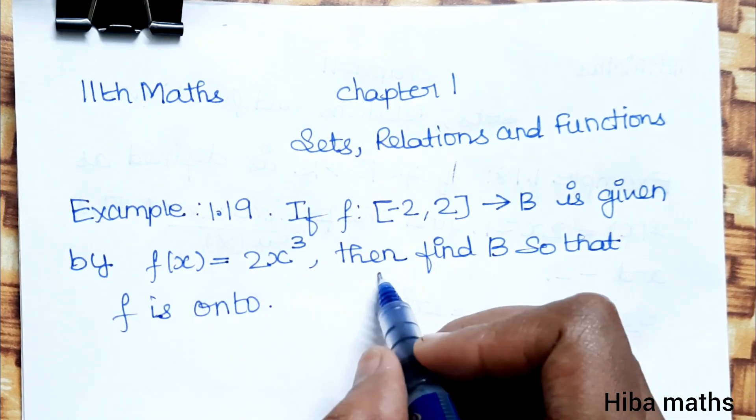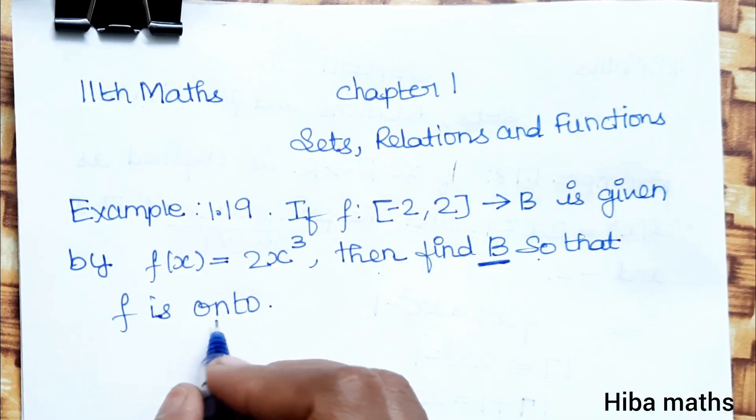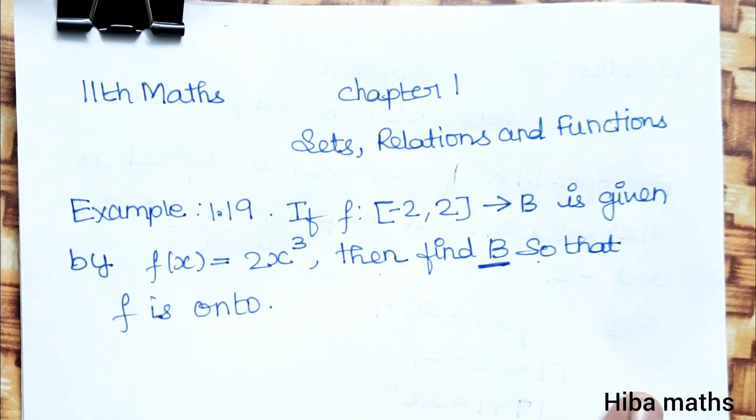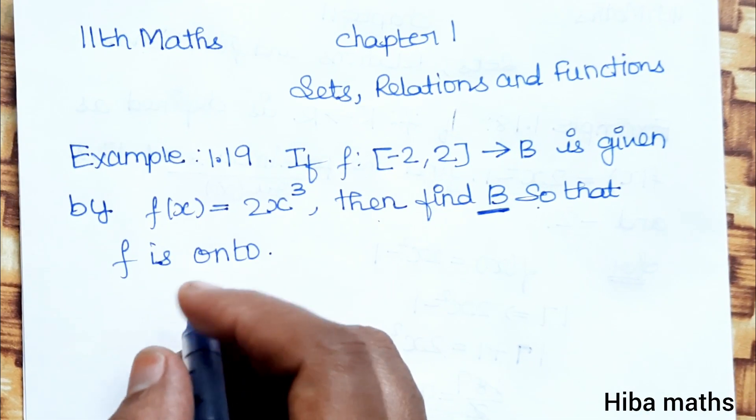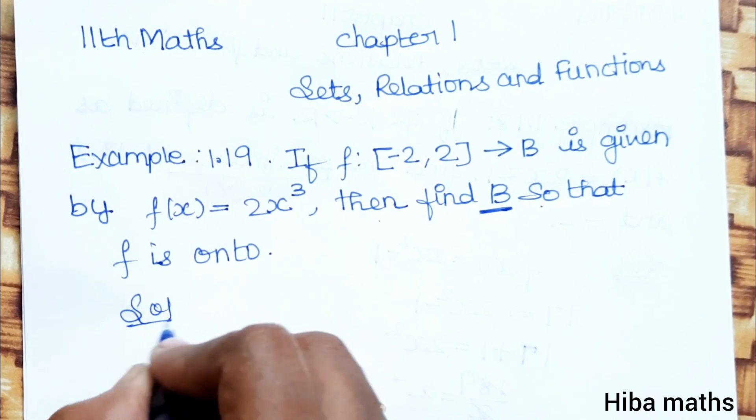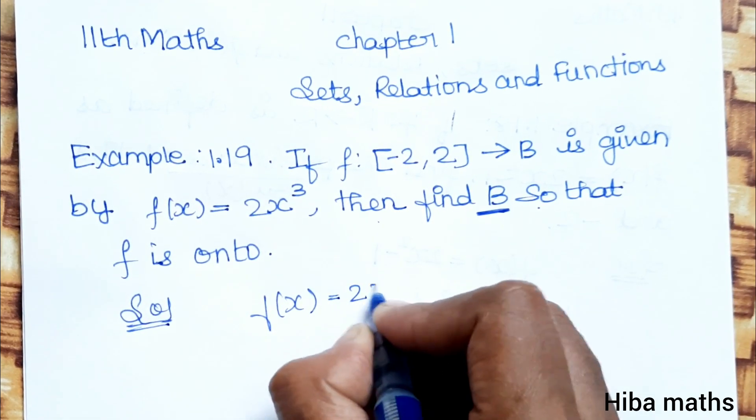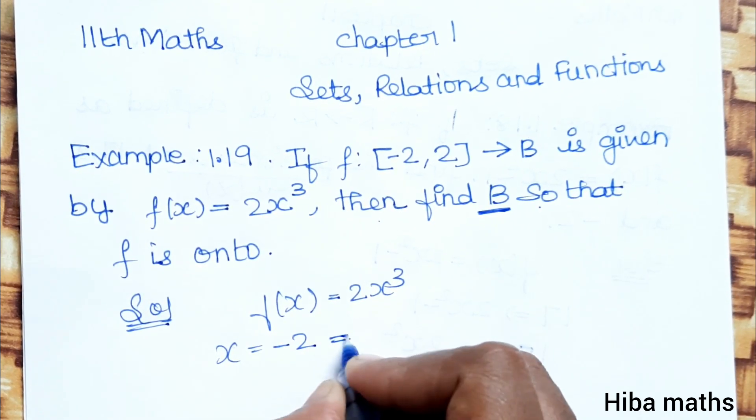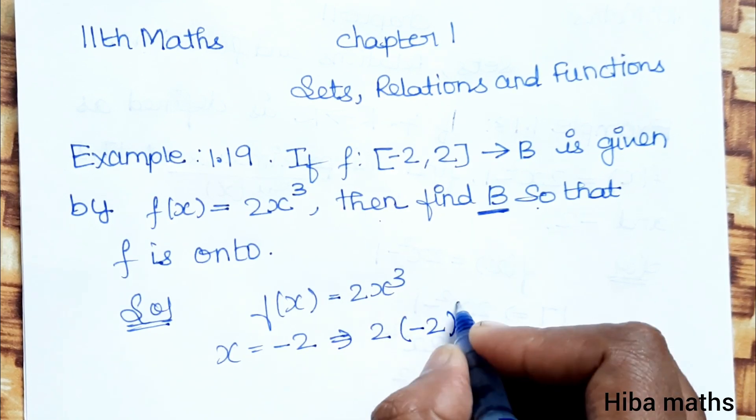This is the function. Then find B so that f is onto. For the function 2x³, first we will substitute x = -2. So 2 times (-2)³...